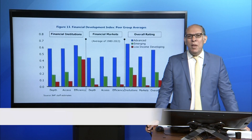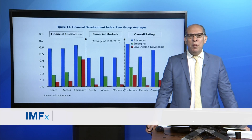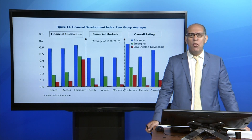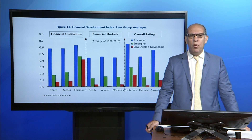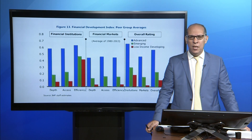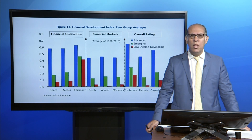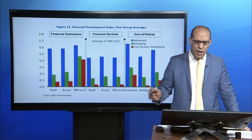The gap in financial development between advanced economies and emerging markets differs across the various dimensions of financial development highlighted in Figure 13. Despite lower depth, the efficiency of emerging markets and low-income and developed countries' financial institutions is relatively high.